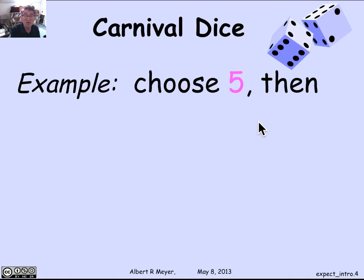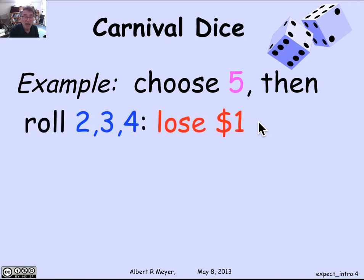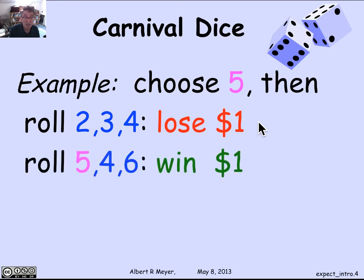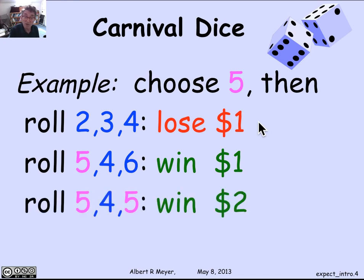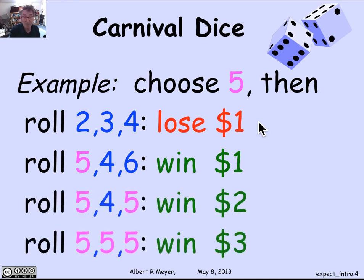Let's do an example. Suppose your favorite number is five. If your roll comes up 2, 3, and 4 — no fives — you've lost $1. If your rolls came out 5, 4, 6, there's one five so you've won $1. If it came out 5, 4, 5, there are two fives and you've won $2. And if it was all fives, you've actually won $3.